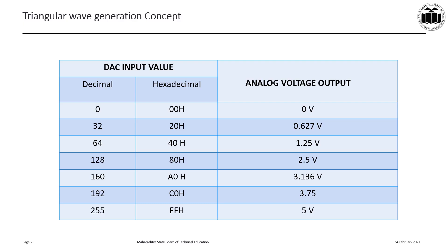The digital input values and the corresponding analog output voltage are tabulated for your reference. As we are using an 8-bit DAC, the maximum input we can give to the DAC is FFH. As you can see in the table, if the input is 00H — that means all 8 bits of the DAC are 0 — the analog output voltage is 0V. When the input is 20H (hexadecimal 20H or decimal 32), the output voltage is 0.627V. The output voltage corresponding to a particular input value depends upon the step size of the DAC, which you must have learned in Unit 4. When we give the maximum digital input FFH to the DAC, the analog output voltage we get is 5V.